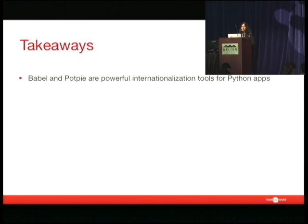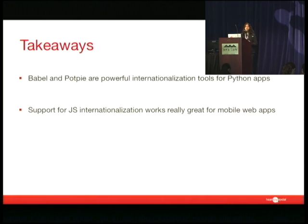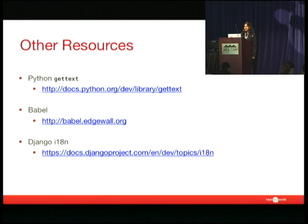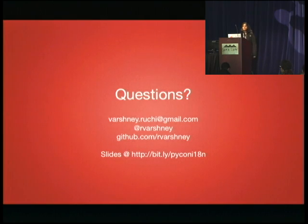Here are some takeaways. Babel and PodPy can really provide some powerful internationalization tools. And especially with support for JavaScript internationalization, you can get your mobile applications working really well with all of this internationalization infrastructure. Hopefully, by the end of this, I've really convinced you that you should internationalize early and make sure that your application is ready to localize from day one. Here are some other resources I found useful. If you have any questions, feel free to reach me at any of these sources — the slides are up on PyCon 180N. Thanks.